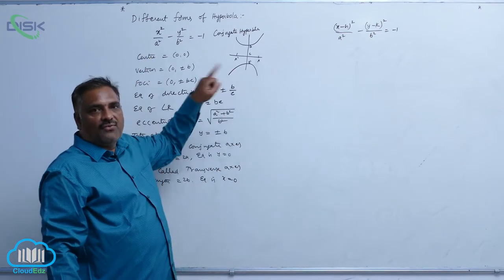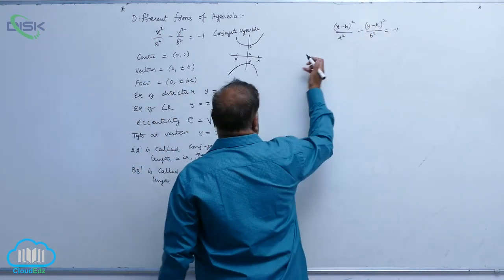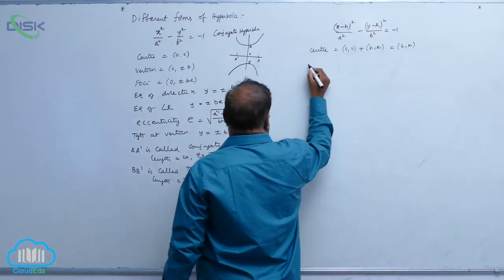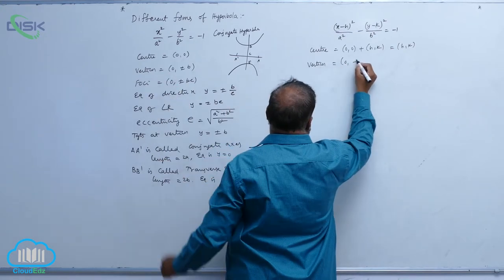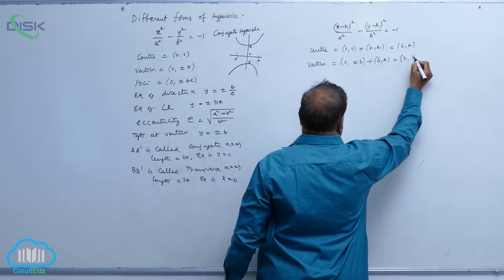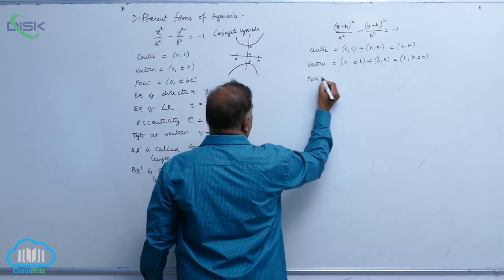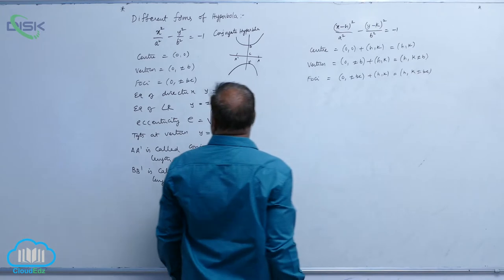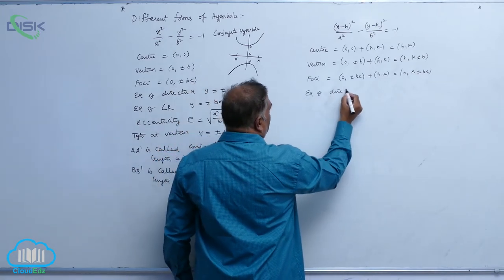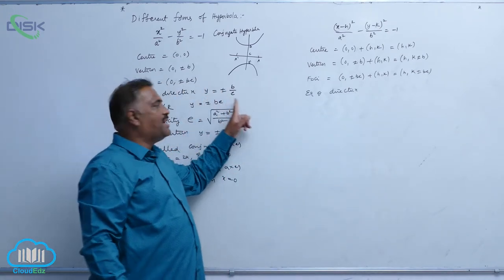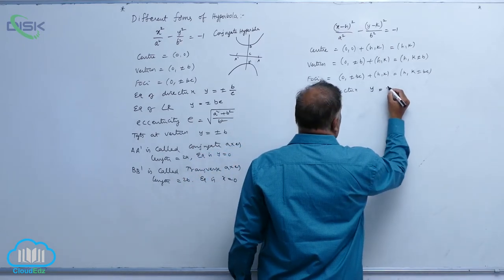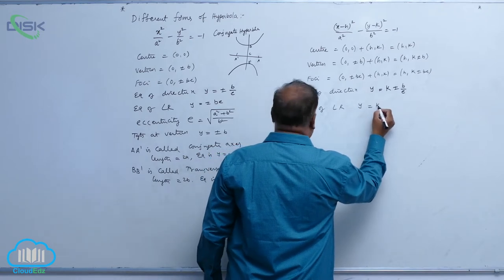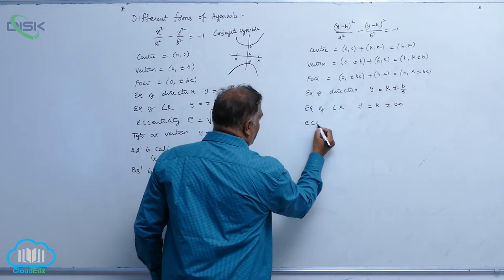Let us shift the origin from (0, 0) to (h, k); the new format of equation will be like this. Center = (0,0) shifted to (h, k). Vertices, previously (0, ±b), become (h, k ± b). Foci, previously (0, ±be), become (h, k ± be). Equation of directrix, previously y = ±b/e, becomes y = k ± b/e. Equation of latus rectum becomes y = k ± b/e. Eccentricity will not change: e = √(a² + b²) / b.